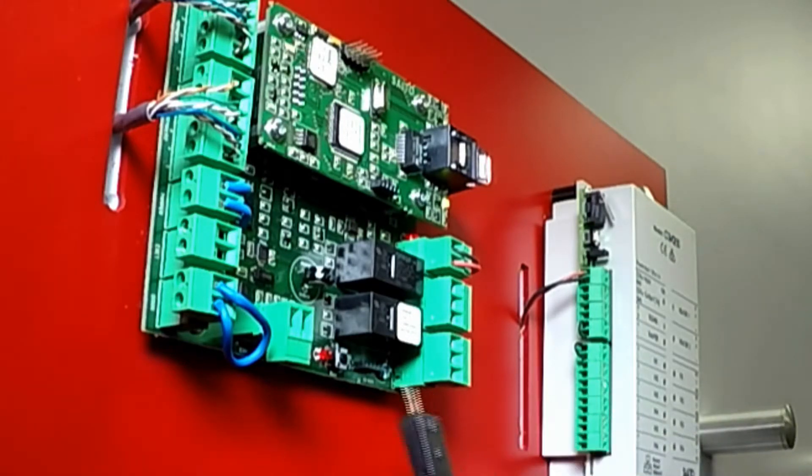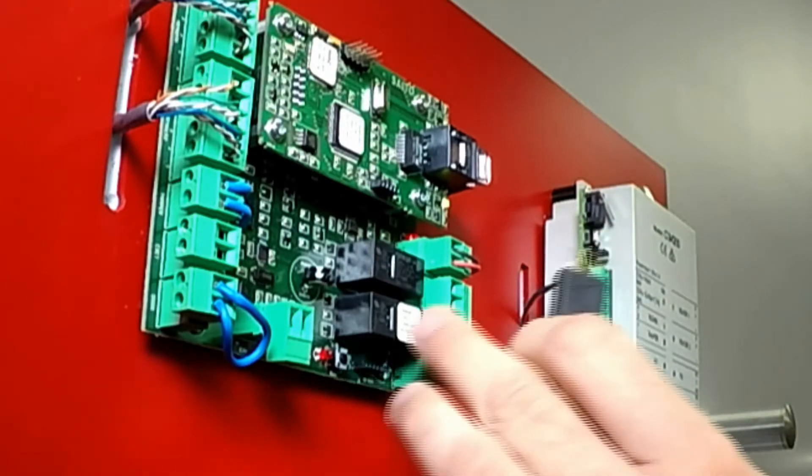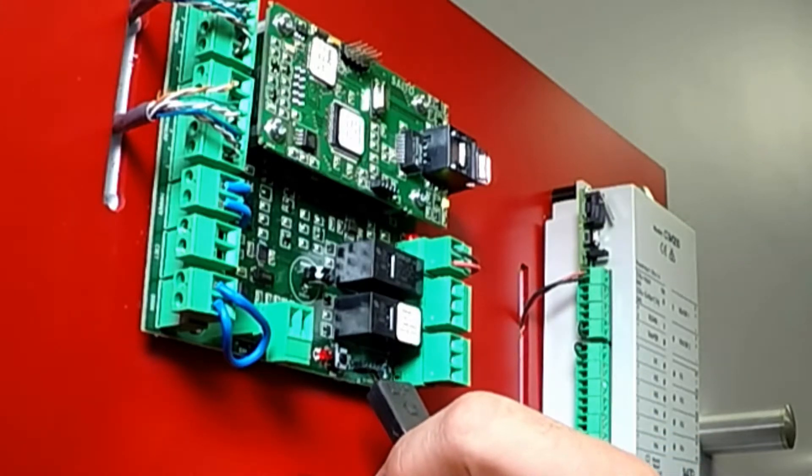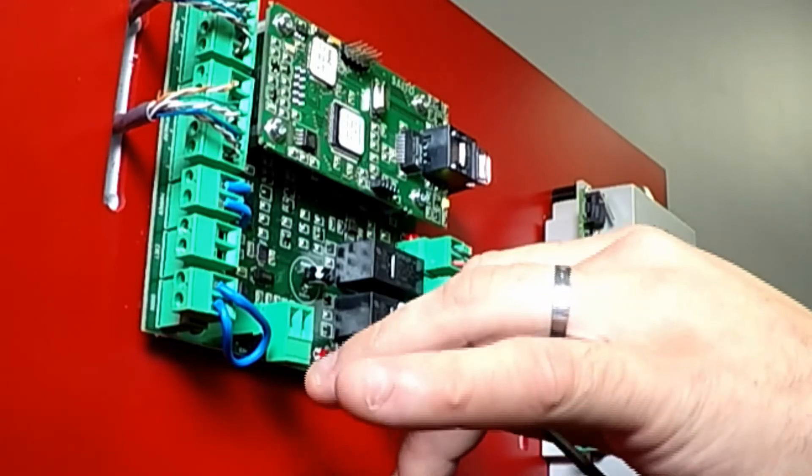You want the up facing up towards the ceiling or towards these switches, and you're going to place the prongs into the first, middle, and last hole. Then plug that in.